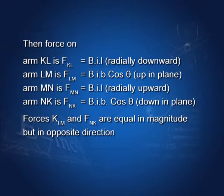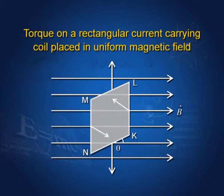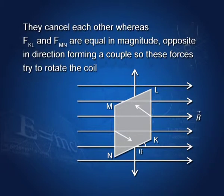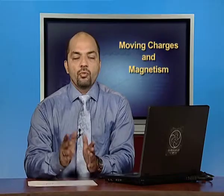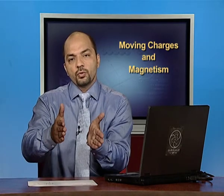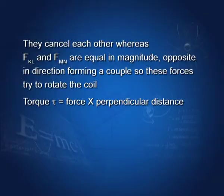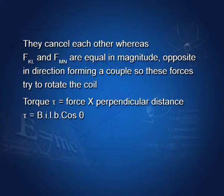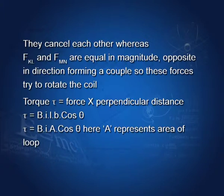It is clear that forces FLM and FNK are equal in magnitude but in opposite directions, so they cancel each other. The forces FKL and FMN are equal in magnitude and opposite in direction, forming a couple — one force acts downward, the other upward — which tries to rotate the coil. So the torque τ equals force into the perpendicular distance between the two forces, which is B cos theta. Substituting these values, we get τ equals BIL·B cos theta, and since length times breadth equals area, torque τ equals BIA cos theta.